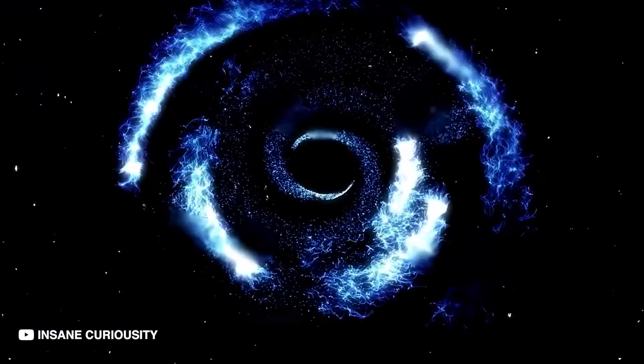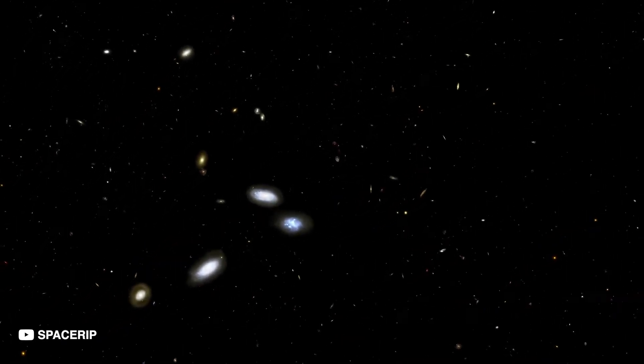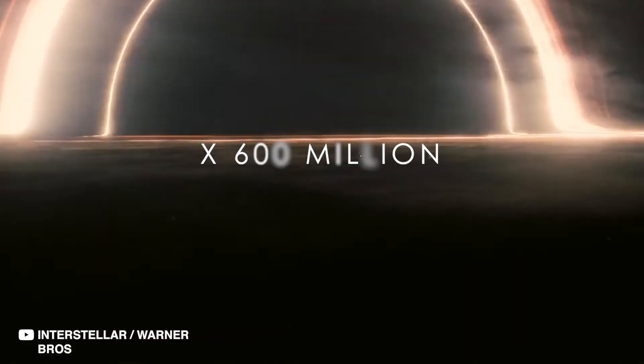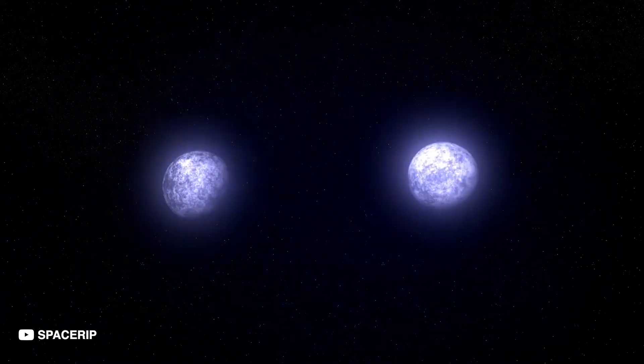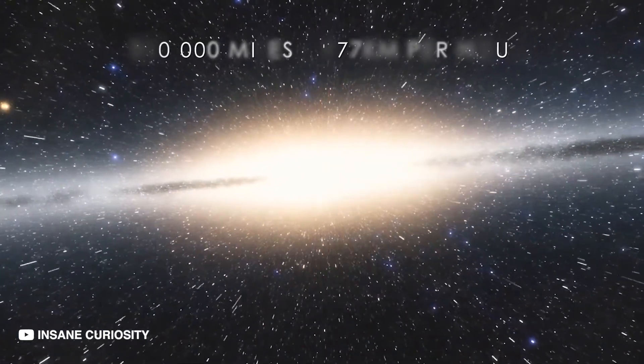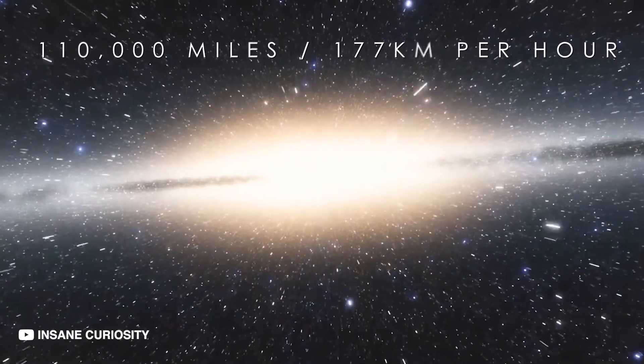And because of that, they are not easy to spot in the endless darkness of space. There may be hundreds of them in our galaxy alone. Rogue ones around 600 million times the mass of the Sun, likely those that got kicked away when galaxies collided. They cannot be spotted and they move at a speed of 110,000 miles or 177 kilometers per hour.